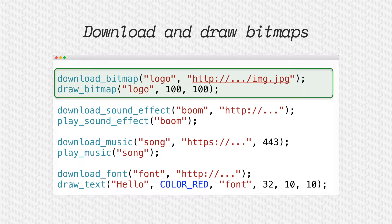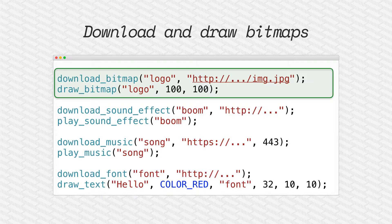So if we wanted to download and draw a bitmap, we call download bitmap. We pass the bitmap that we're going to download — 'logo' — and the URI, so in this case http blah blah blah image.jpg.